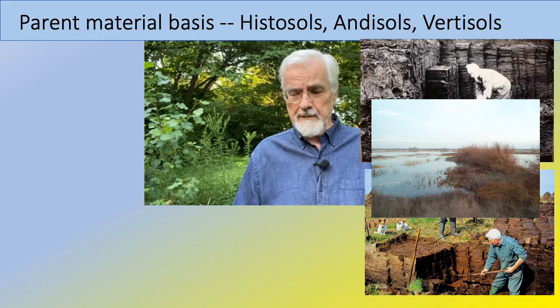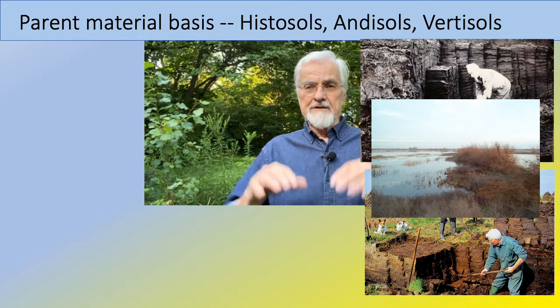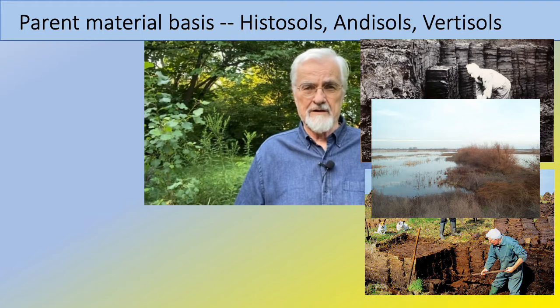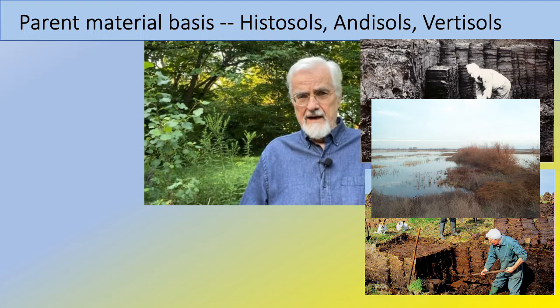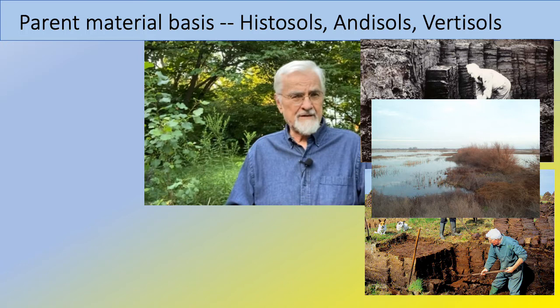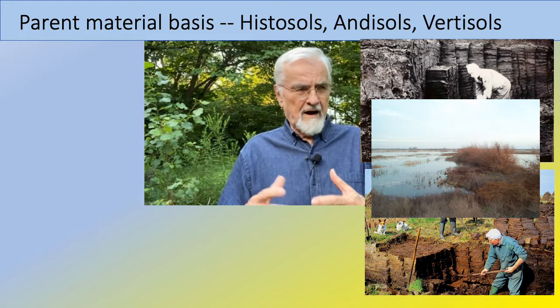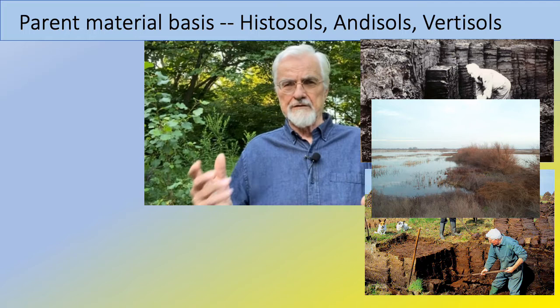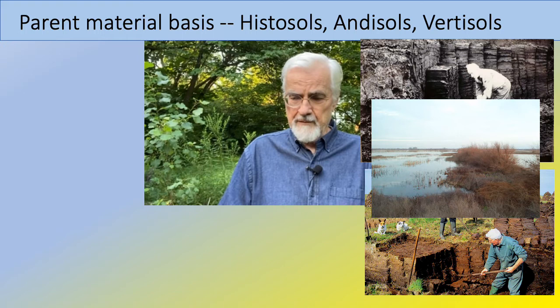One problem with histosols is that they tend to subside. Since they contain a lot of organic matter, as that matter decays — sometimes accelerated by agriculture — the soils themselves can decay fairly dramatically. They're frequently referred to as muck soils in the United States. Large concentrations exist in California and on the East Coast, where New Jersey tomato production was famously based on muck soils.